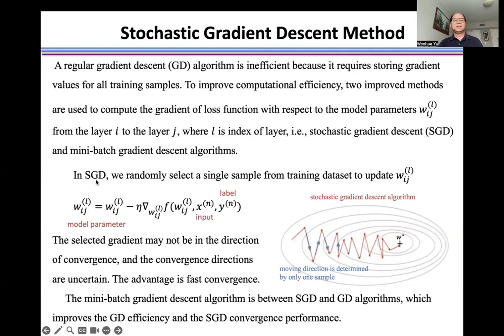In SGD, we randomly select a single sample from the training dataset to update the model parameters w, where x is the input and y is the corresponding label.